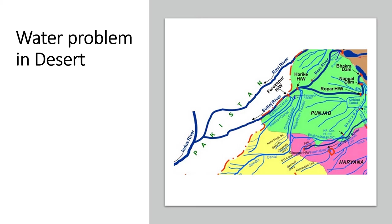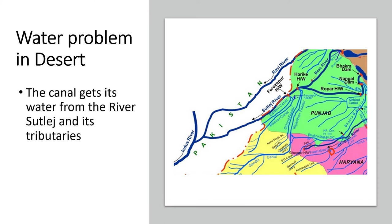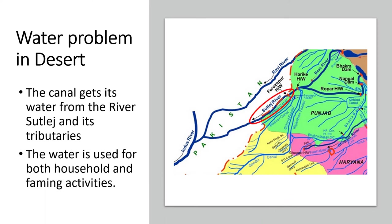We find scarcity of water in desert areas. The canal gets its water from the river Sutlej and its tributaries. The water is used for both household and farming activities. It helps farmers to grow crops such as jowar, bajra, maize, barley and wheat.